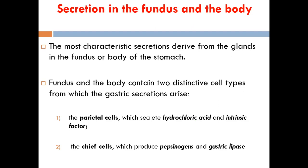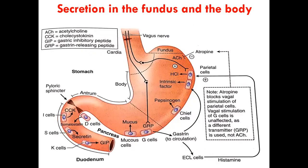Much of the hydrochloric acid is produced within the fundus and the proximal part of the body. As seen in this diagram, the fundus and proximal body contain a lot of parietal cells producing hydrochloric acid and intrinsic factor, and chief cells producing pepsinogen. The stimulus can be the vagus nerve releasing acetylcholine, which stimulates cells to increase secretions.